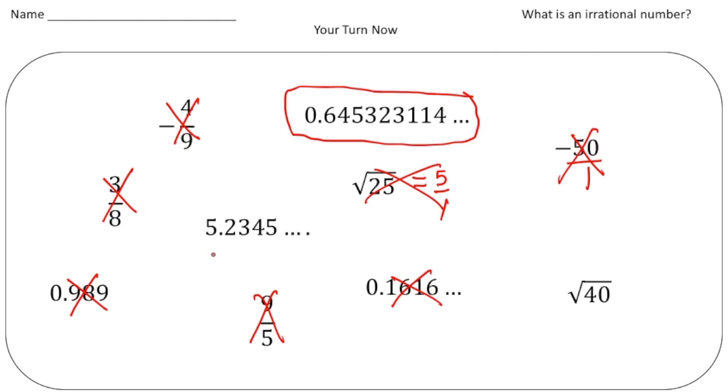Here we have 5.2345 and again dot dot dot. Now we don't know what the next number is going to be. It could be a 7, it could be a 1. And again there's no real pattern even though these go up by 1, that really doesn't matter that much. If the next number was a 2 and a 3 and then a 4 and a 5, well then maybe it repeats. But this is another example of an irrational number.